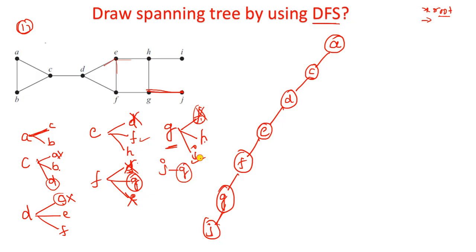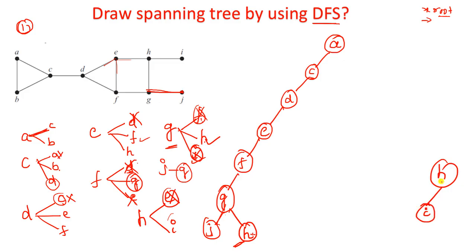Insert I for H. Now I has only one incident vertex, H, which is already visited. So we stop here and backtrack to H. From H, E and I are completed. Go back to G - F, H, J are all completed. Backtrack to F. F has D, E, and G - all are already visited. Backtrack to E - E has F, H, D, all visited. Backtrack to D.